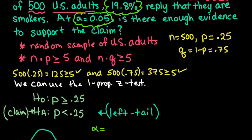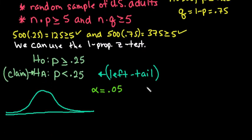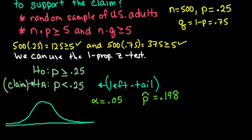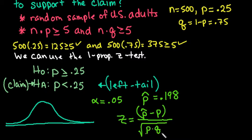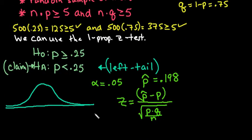We also need to know our p hat, which is 19.8%. So alpha is 0.05 and p hat is 0.198. Always write it as a decimal. You don't need q hat, so don't bother finding it. The formula uses p and q in the denominator. So when we go to calculate z, we will do p hat minus p over p times q divided by n.